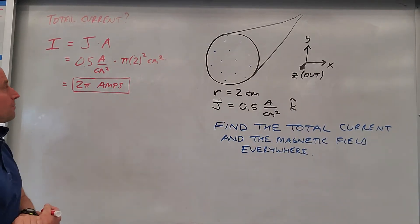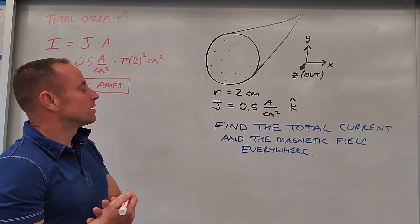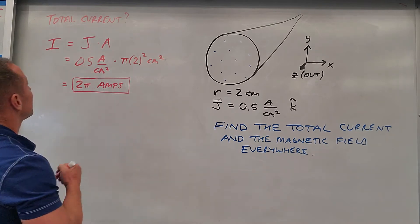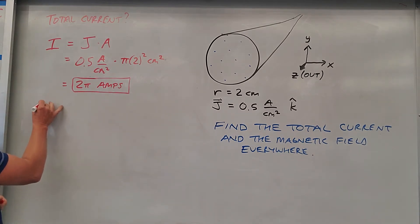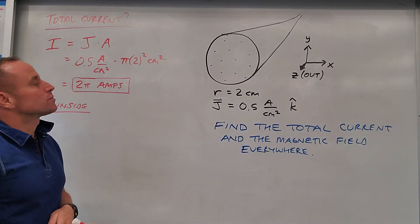So there's like 6.28 amps coming out of this, coming this way. Then what we're supposed to do is get the magnetic field everywhere. The easiest way is to use what's called Ampere's law. So we're going to get the field inside first. We'll do that first: field inside.